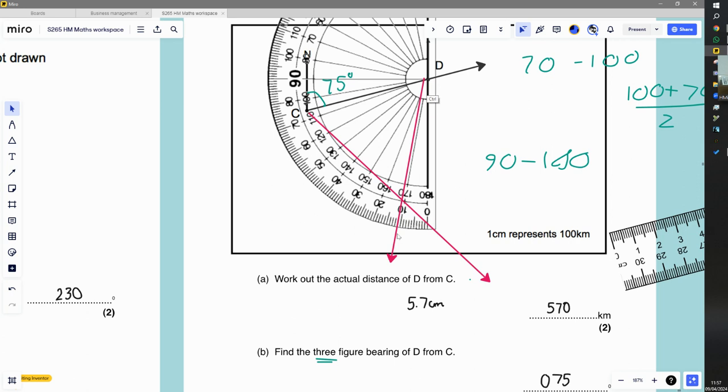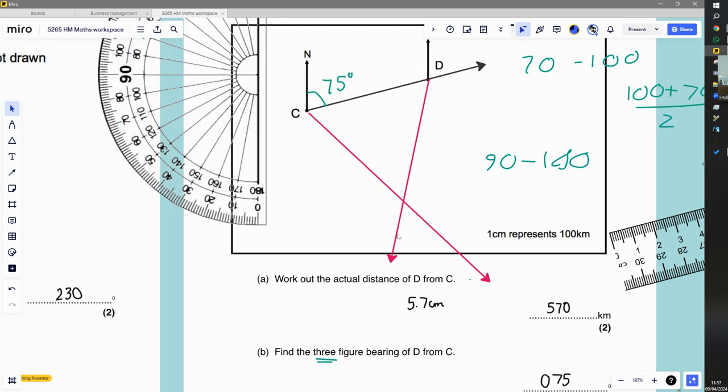Okay, so somewhere on this line and it's also somewhere on the other pink line, which means it must be at this point here. So we can draw our cross and then we can label it. That's point E.